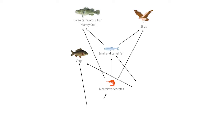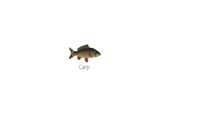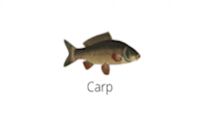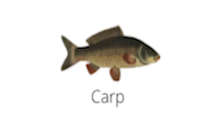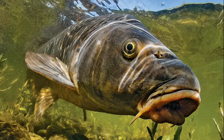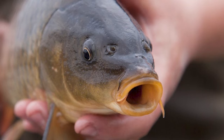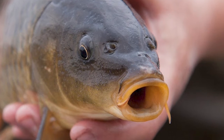If carp are not culled from our waterways, this destruction will continue until most, if not all, natural species will be eliminated. It is under consideration to infect carp around Australia with a virus to kill them, with the hope that the disease will spread throughout carp populations; however, there are concerns about it affecting other species.